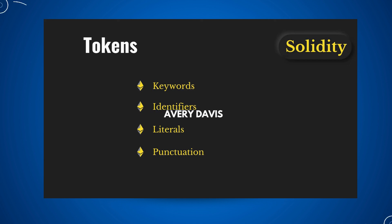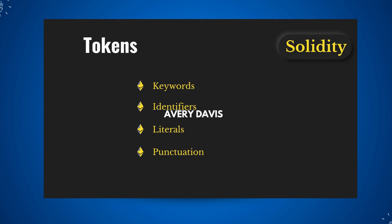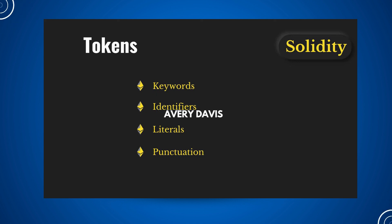Now let's talk about some important components of Solidity. First, keywords: Solidity has special reserved keywords that cannot be used as variable names, such as contract, library, interface, pragma, and modifier. These are reserved and you cannot use them as variable names in your contract. The second component is identifiers — you can define variables and functions in your smart contract with names that act as unique identifiers for those particular functions or variables.